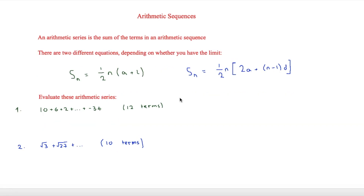The next thing to look at is an arithmetic series, which is the sum of the terms in an arithmetic sequence. There are two different equations depending on what information you have. If you're given the last term (the limit), the formula is S_n = (n/2)(a + l). If you don't have the limit but have the common difference d, the formula is S_n = (n/2)(2a + (n − 1)d).